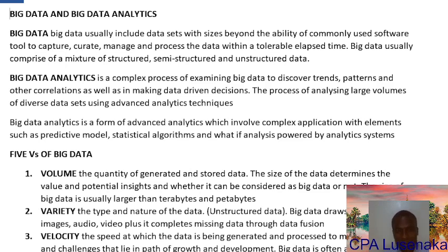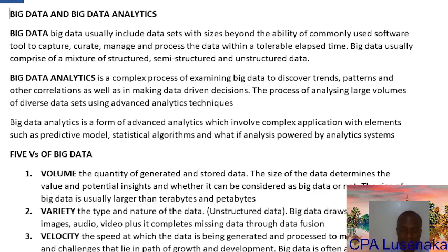Big data is found in terabytes and petabytes — the size is very large. It comprises structured, semi-structured, and unstructured data. Structured data has an arrangement or structure. Unstructured data is not arranged; under unstructured data we can find images, videos, and text. Structured data is clearly categorized — if it's audio it's audio, if it's text it's text.